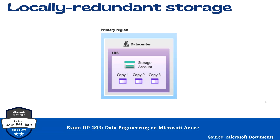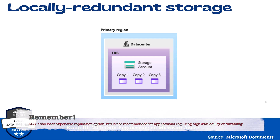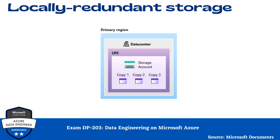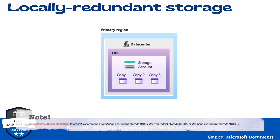In the case of Locally Redundant Storage, LRS copies your data synchronously three times within a single physical location in the primary region. LRS is the least expensive replication option but is not recommended for applications requiring high availability or durability. LRS provides at least 11 nines of durability of objects over a given year. LRS protects your data against server rack and drive failure. However, if a disaster such as fire or flooding occurs within the data center, all replicas of a storage account using LRS may be lost or unrecoverable. To mitigate this risk, Microsoft recommends using ZRS, GRS, or GZRS.